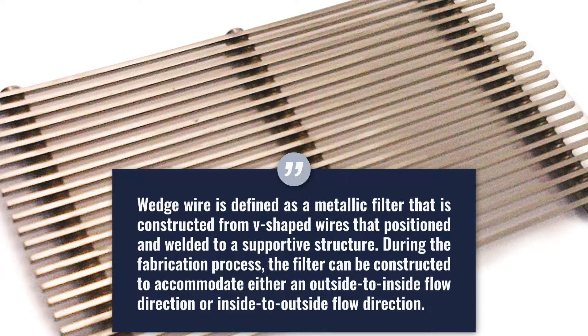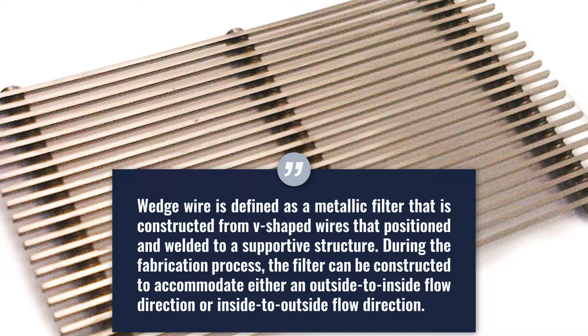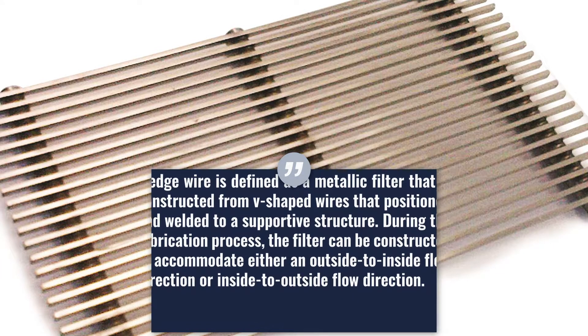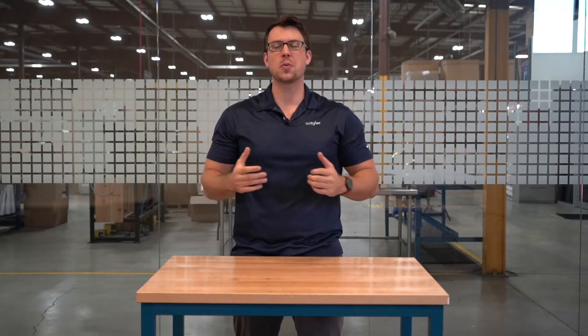Wedge wire is defined as a metallic filter comprised of V-shaped wires positioned and welded to a support structure. During fabrication, wedge wire can either be constructed to accommodate an outside-to-inside flow or an inside-to-outside flow. Wedge wire filters are typically constructed in either cylinders or panels, with a filter diameter of between 1 to 36 inches, a length as long as you need, and a micron rating down to 30 microns.